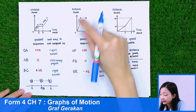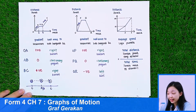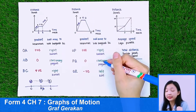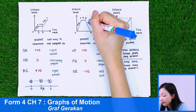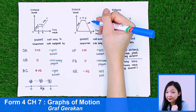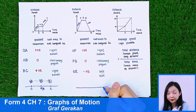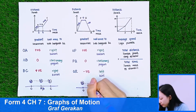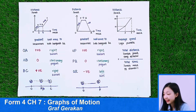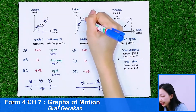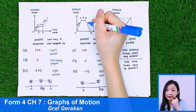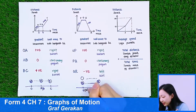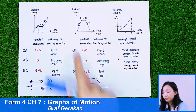Looking at another graph: the gradient here is positive, so the ball is moving to the right. Then the gradient is 0, meaning the ball is stationary. Then the gradient is negative — the ball is turning to the left. So the ball starts at O, moves right to P, stops at Q, then moves back left to the origin O, which is also point R.